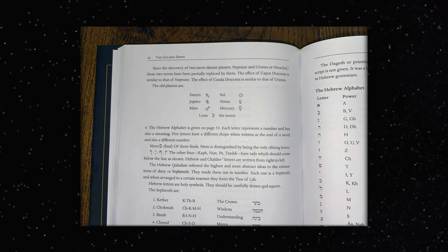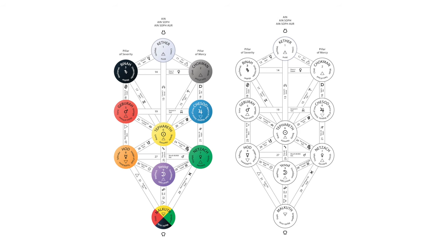The Sephiroth are: 1. Keter, the crown. 2. Chokmah, wisdom. 3. Binah, understanding. 4. Chesed, mercy. 5. Geburah, severity. 6. Tifereth, beauty. 7. Netzach, victory. 8. Hod, glory. 9. Yesod, the foundation. 10. Malkuth, the kingdom.